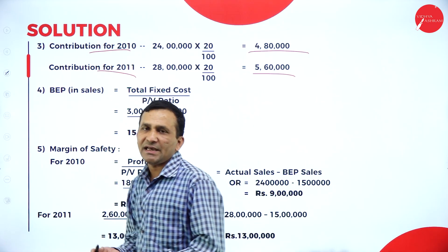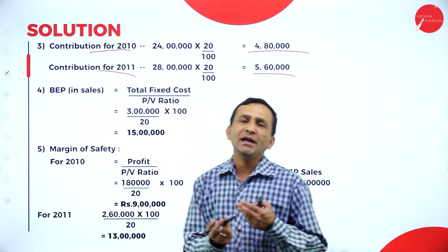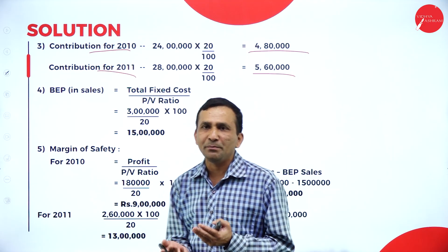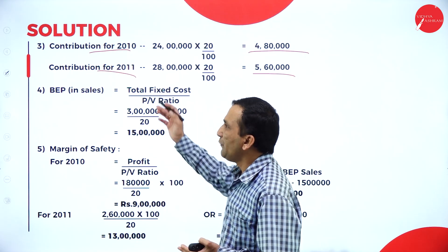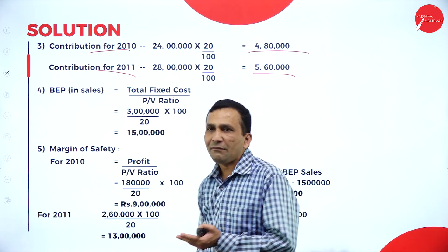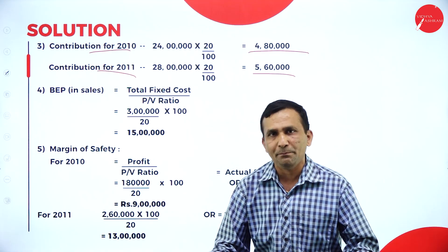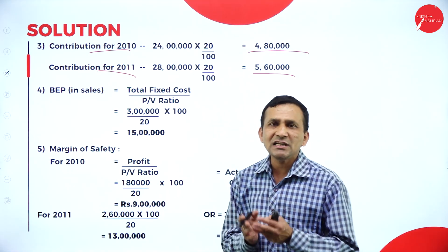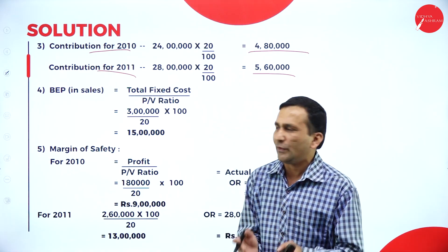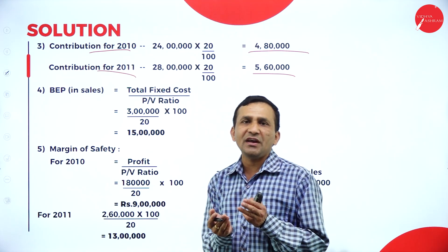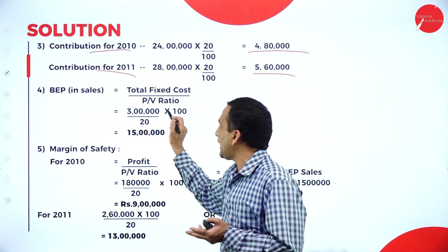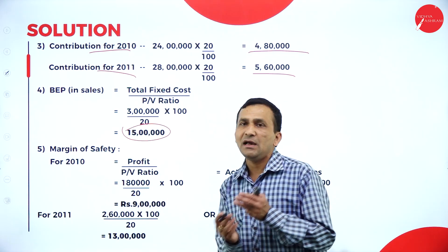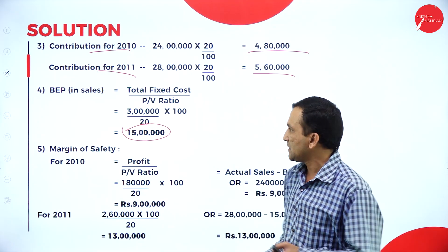Moving to breakeven sales using the formula: fixed cost divided by PV ratio. Total fixed cost is 3 lakhs, divided by 20% (into 100), giving breakeven sales of 15 lakhs. Everywhere we are applying the PV ratio, as clearly specified in the question.